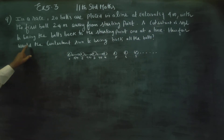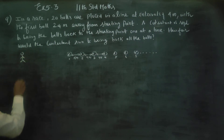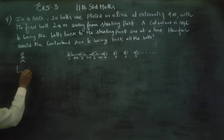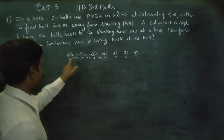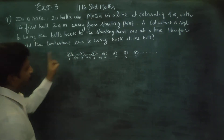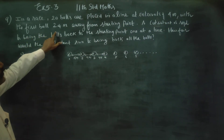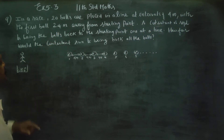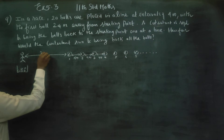A contestant is required to bring the balls back to the starting point. If you work on this, you can pick one ball at a time and place them in the basket. The contestant runs to the first ball — the gap is 24 meters. For the second ball, the contestant runs 24 meters as well.